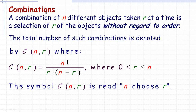Here's a definition: a combination of N different objects taken R at a time is a selection of R of the objects without regard to order. Switching the order around does not make a different combination. That does, however, make a different permutation. If you change the order with the same number of objects, you get a different permutation, and that is important in some problems.